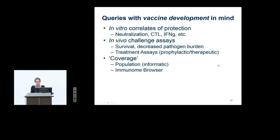But also the way to get at that from the standpoint of data already captured in the database — that is, validated epitopes — is to use the immunome browser as a starting point for looking at regions that have been heavily studied and shown to be highly reactive.